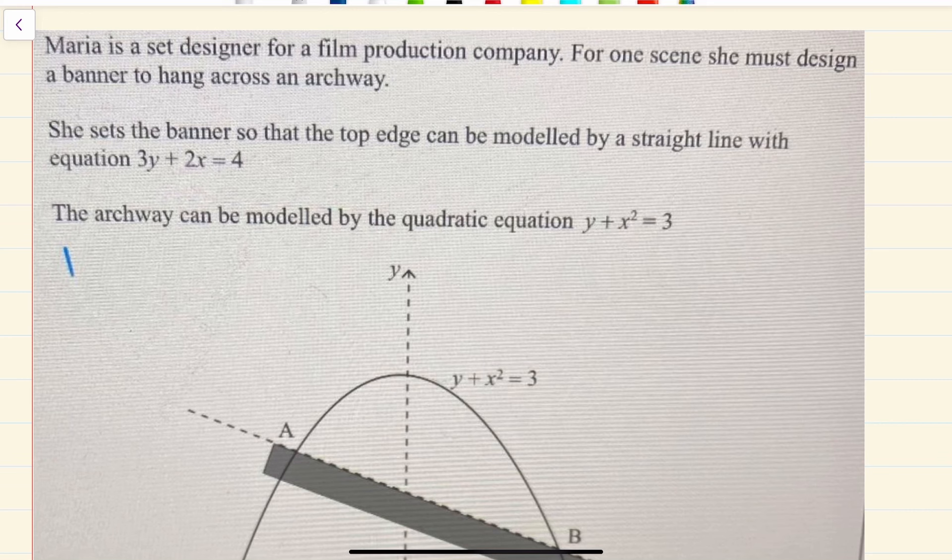She sets the banner so that the top edge can be modeled by a straight line with equation 3y plus 2x equals 4. The archway can be modeled by the quadratic equation y plus x squared is equal to 3.